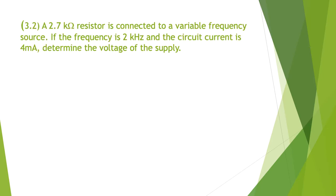Our next one is 3.2. A 2.7 kilo ohm resistor is connected to a variable frequency resource. If the frequency is 2 kilohertz and the circuit current is 4 milliamps, determine the voltage of the supply.